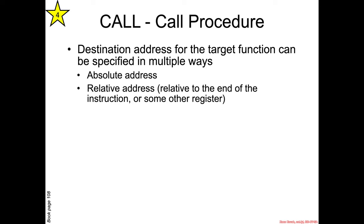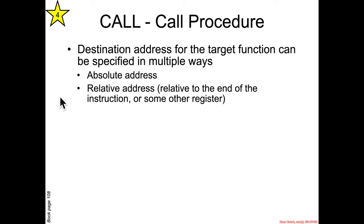The destination address can actually be specified in multiple ways. It could be an absolute address, or it could be a relative address — either relative to the end of the call instruction, or relative to some completely different register. You won't really see the differences between the encodings most of the time, but later when we talk about assembly instruction encoding, or if you're hard-coding assembly yourself, you'll certainly care about how targets of call instructions are encoded.